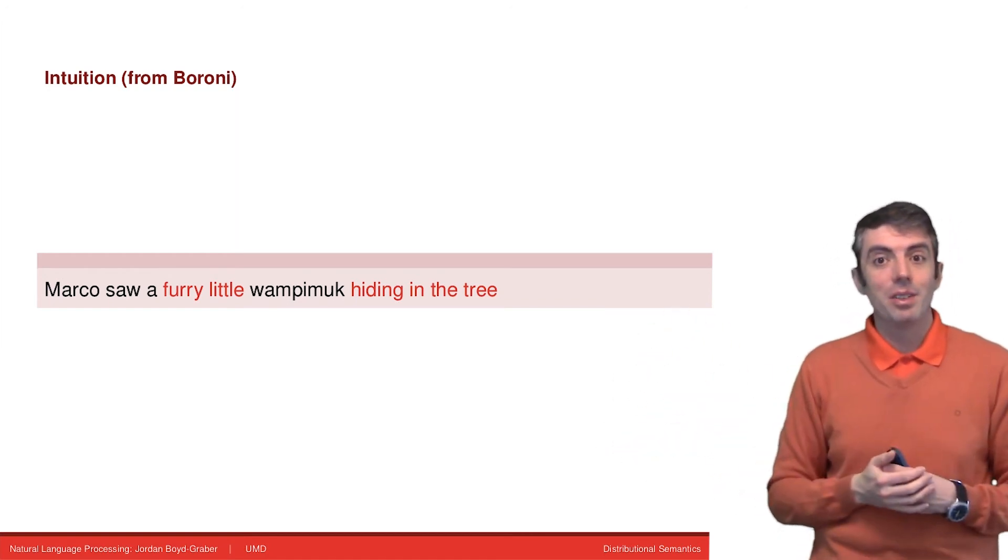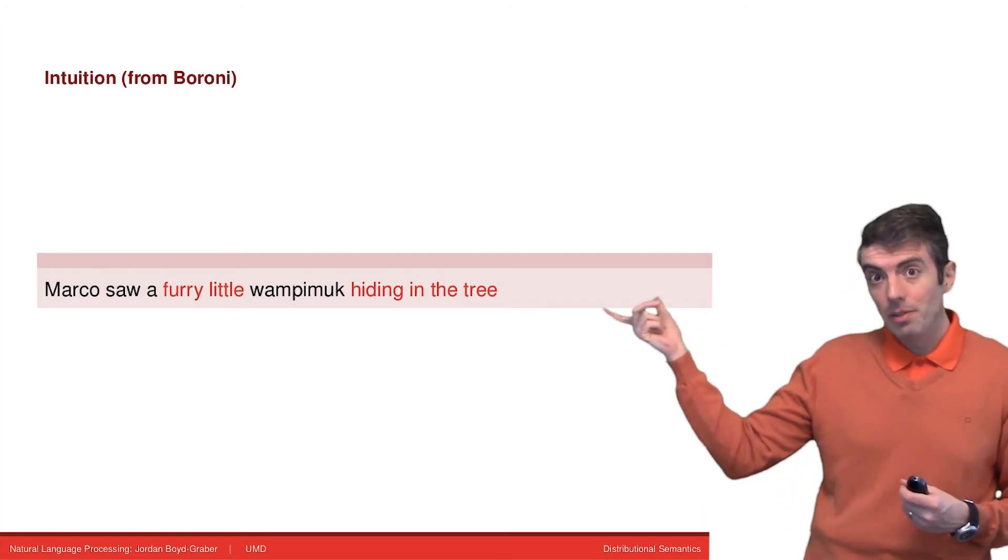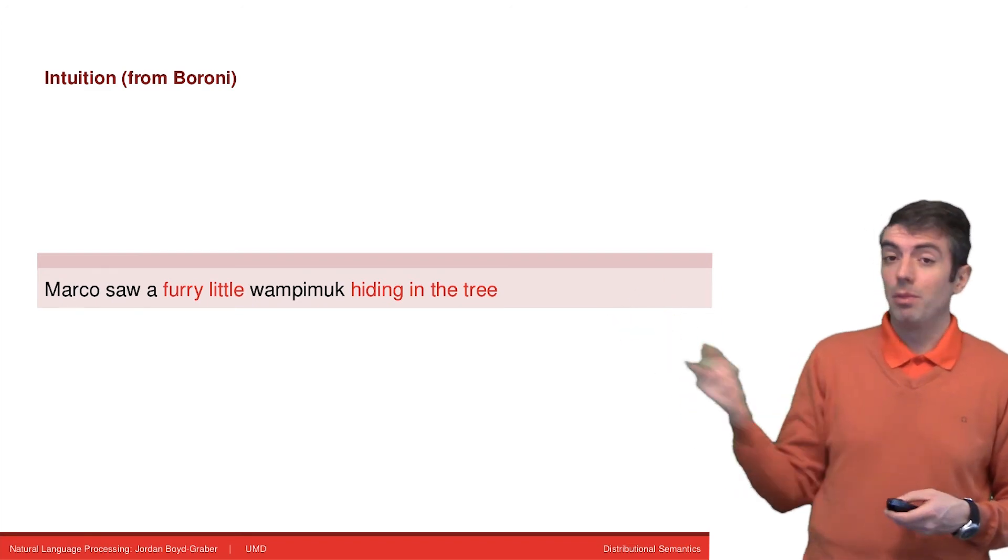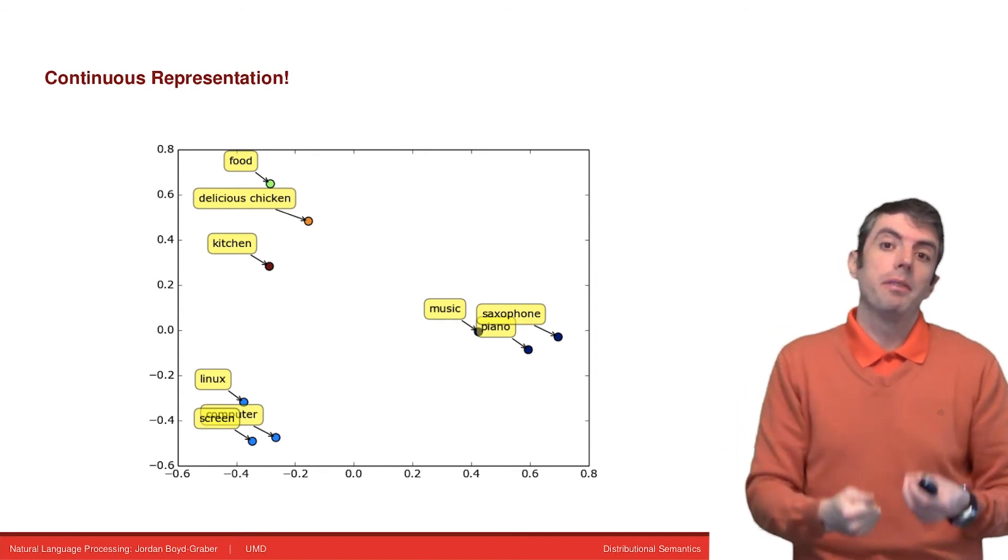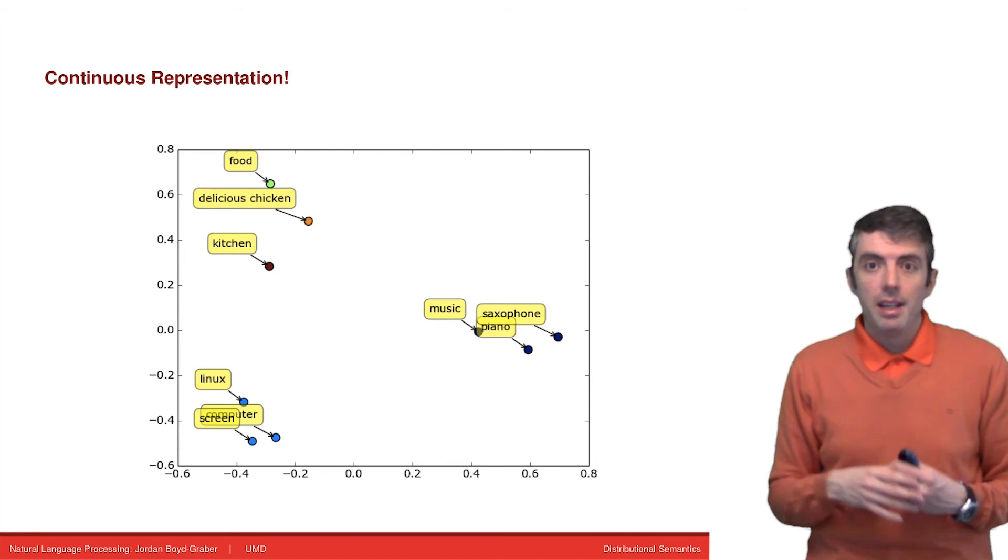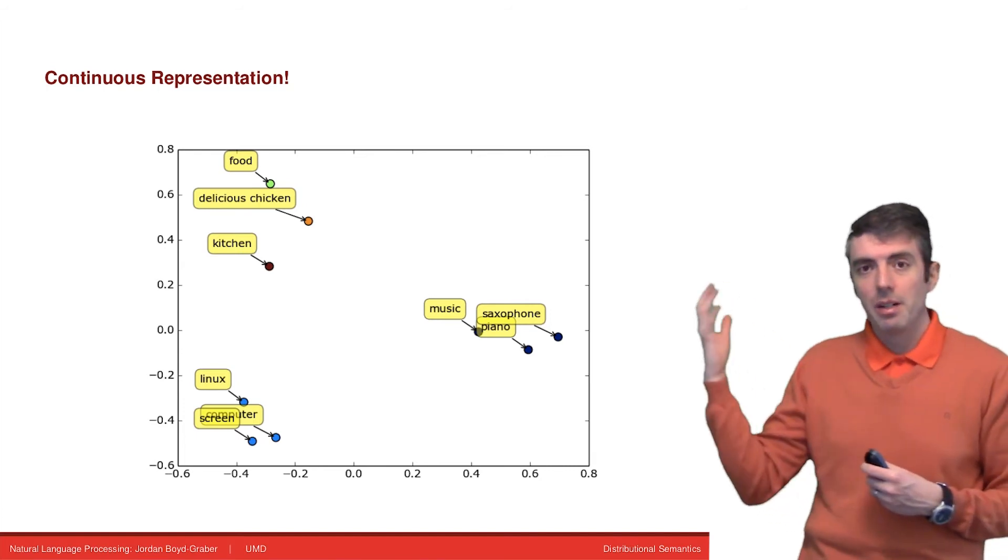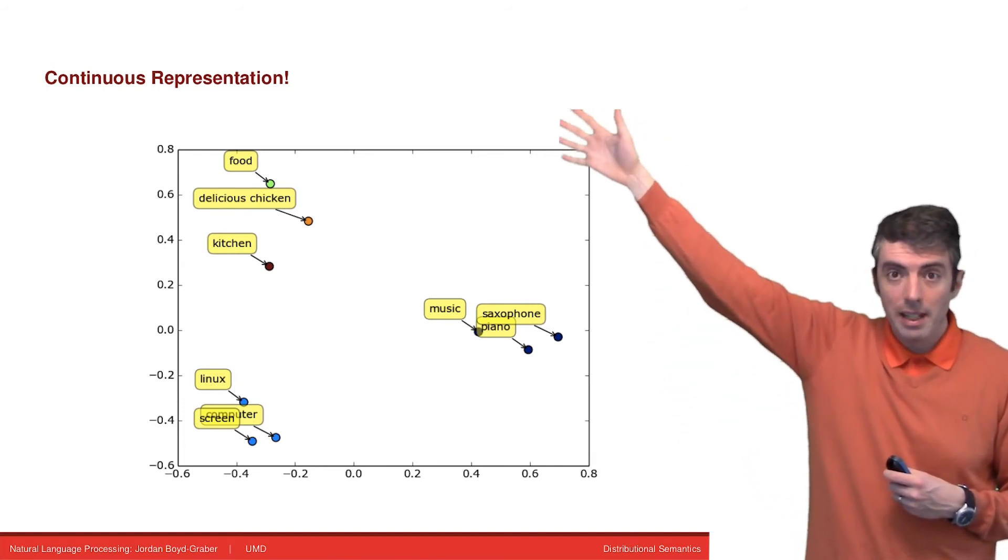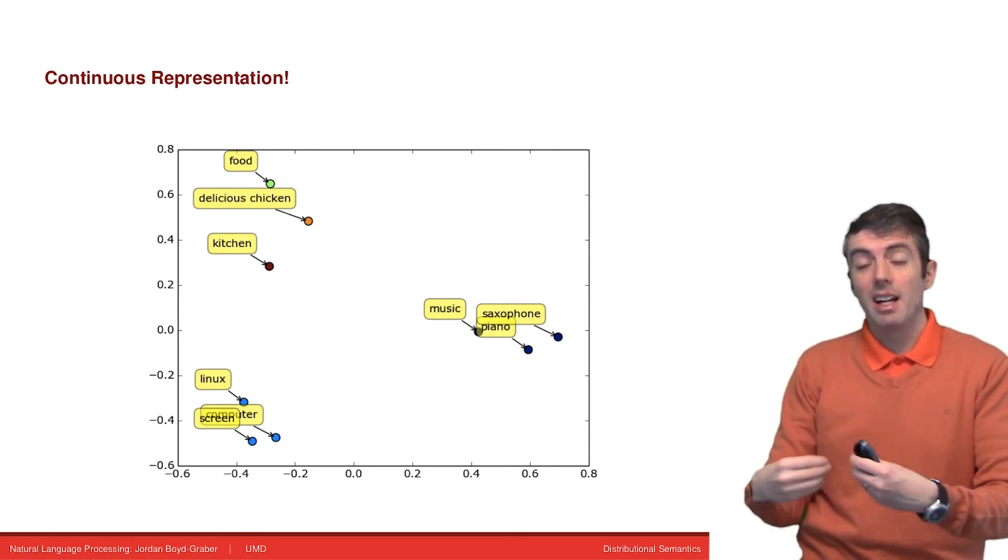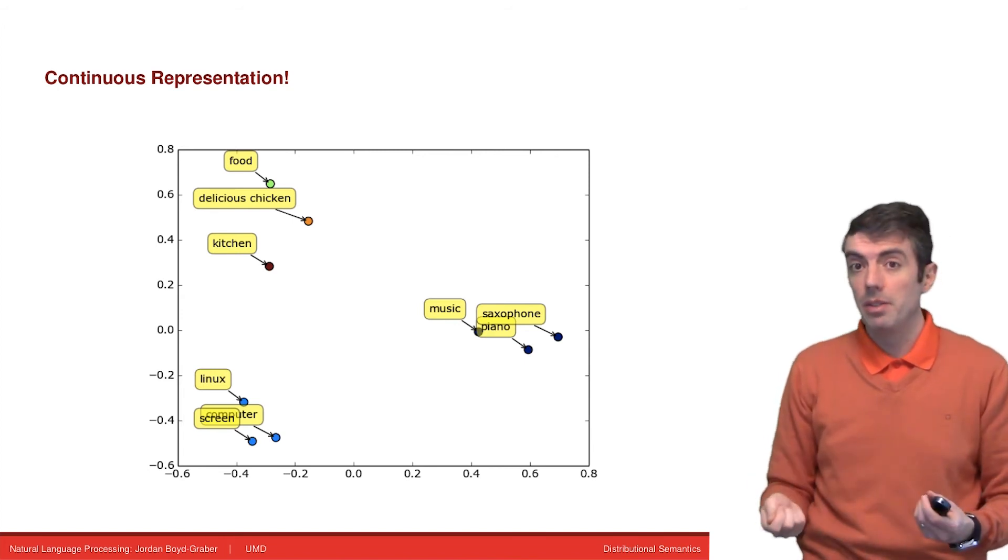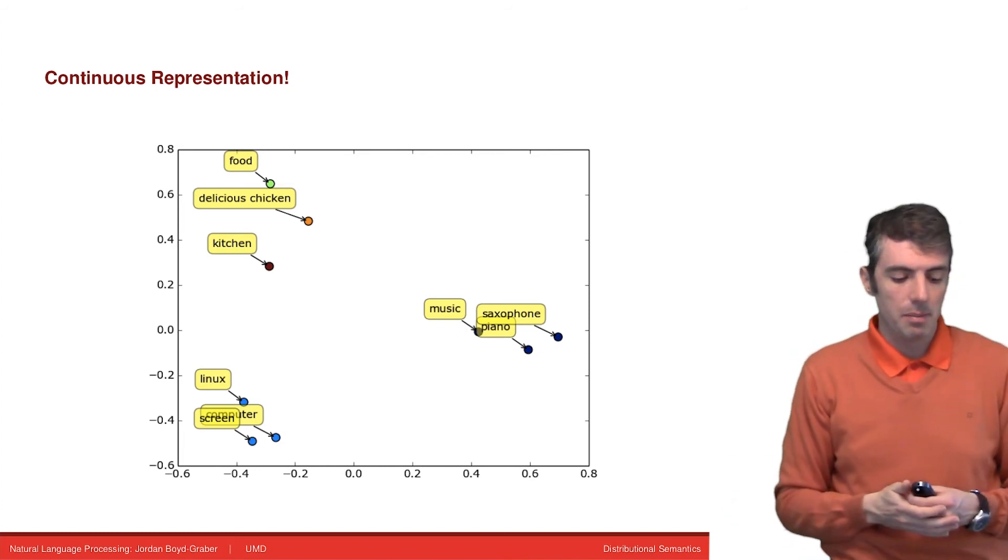Other furry little things that live in trees include chipmunks and squirrels and things like that. So you're able to infer something about wampamuck even if you've never seen it before. The way we're going to let a computer make the same sort of inference is we're going to encode words with similar contexts to be close in some vector space. Here we have musical instruments and food-related stuff clustered together. We're going to have vectors represent the kinds of contexts that words live in so that we can do things like a cosine similarity or a dot product to see how similar two different words or concepts are.